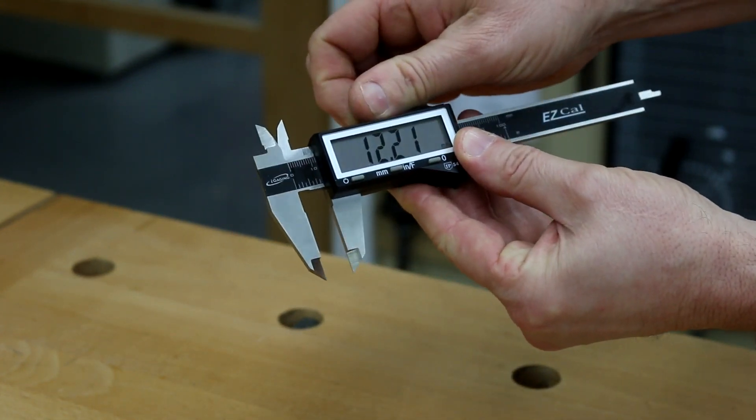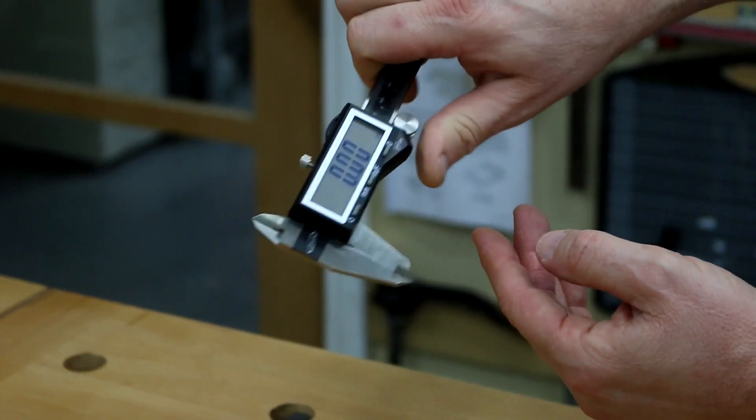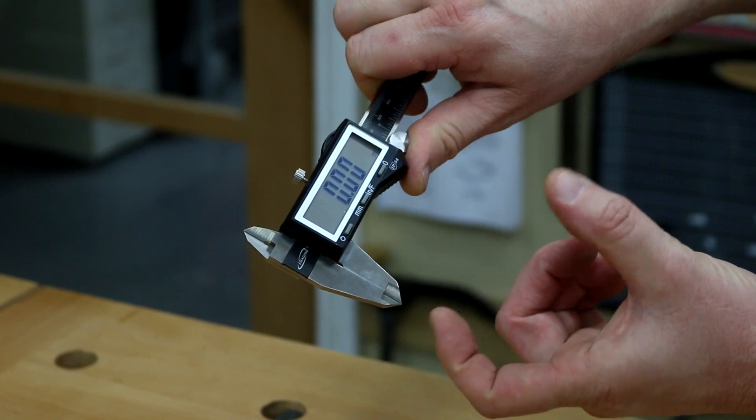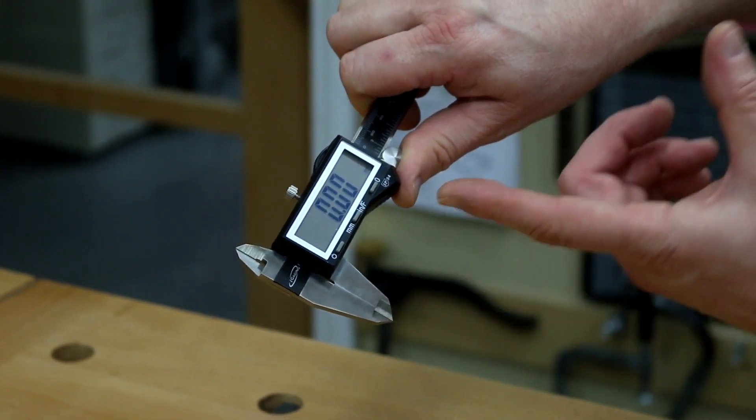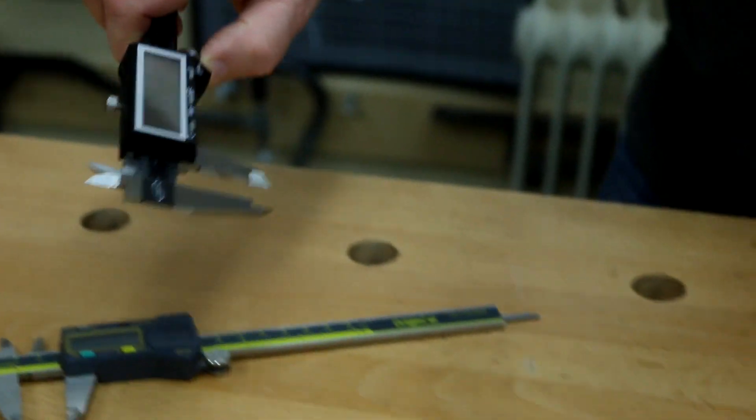When using the thumb wheel to get to a particular size, you can't just force the caliper to make it measure what you want. It'll measure what the actual size is. We're going to use it between the two prongs here for measuring.